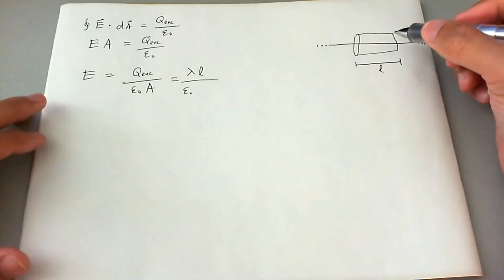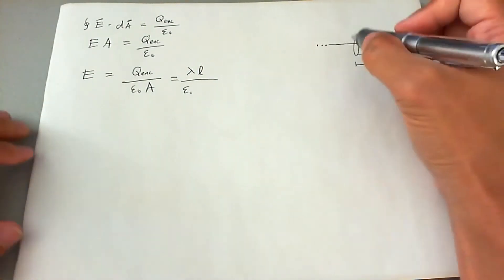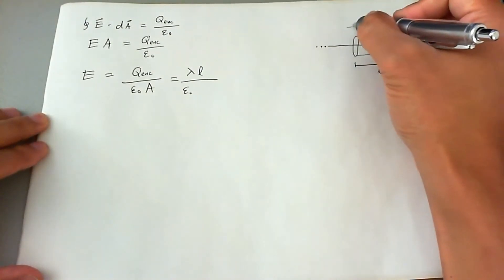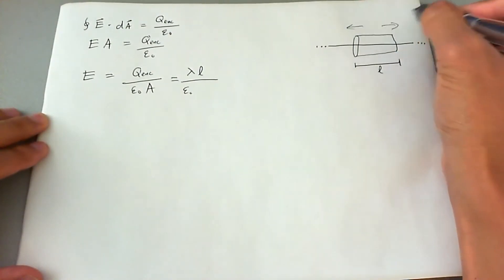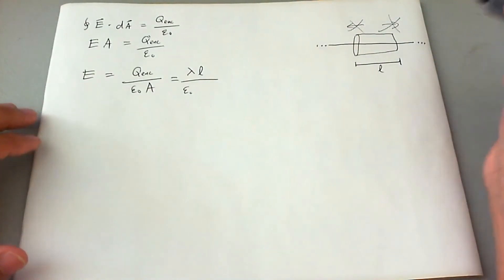Now the surface area is only going to be the area in which E penetrates parallel to. Since it's an infinite line, there is no E field going right or left, right? So that's just completely incorrect.